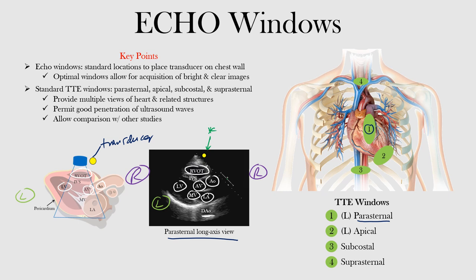That's the parasternal long axis view, but there's also a short axis view, and within the short axis view there are different levels. The second window is the apical window, located on the left side at the apex — usually at the point of maximal impulse or PMI. The third window is the subcostal window, down below, where we can get coronal and sagittal views.